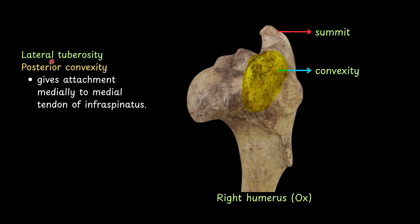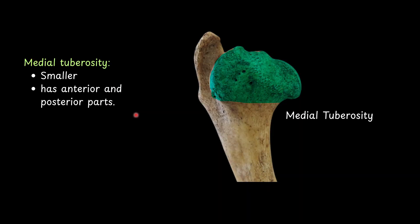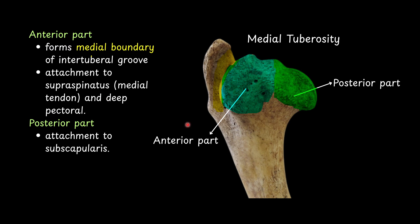The medial tuberosity is smaller and has anterior and posterior parts. The anterior part forms the medial boundary of the bicipital groove and gives attachment to the supraspinatus medial tendon and the deep pectoral muscles. The posterior part gives attachment to the subscapularis muscle.